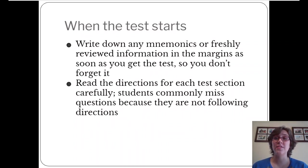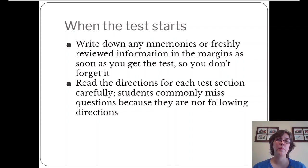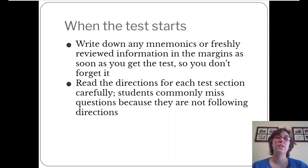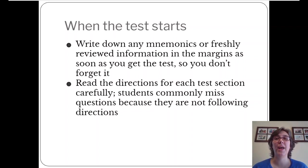When the test starts, try to write down the mnemonics you've learned or any information you've just reviewed in the margins as soon as you get the test, so you don't have to try to remember it long-term. For example, remember the acronym VOICE — voluntary operant, involuntary classical. You could write that in the margin quickly. This is useful if you studied something at the last minute and you're trying to make sure those five or six things don't pass out of your short-term memory.